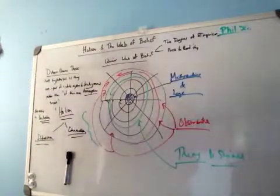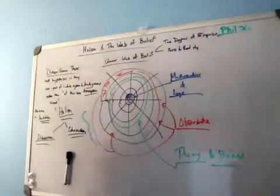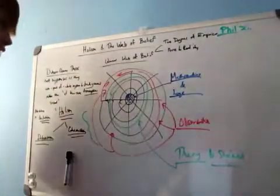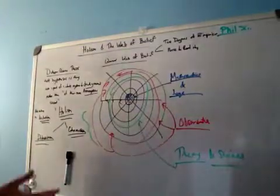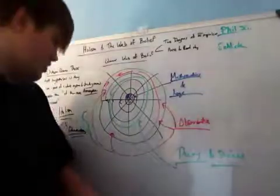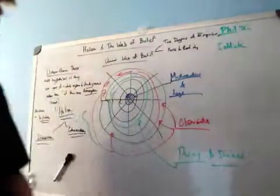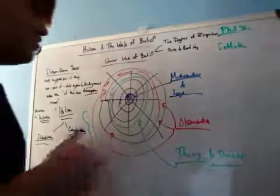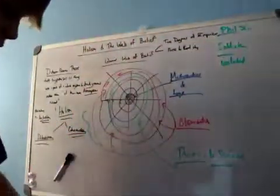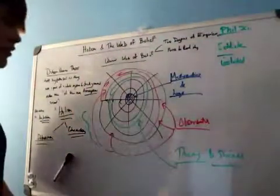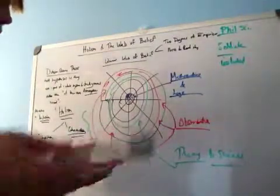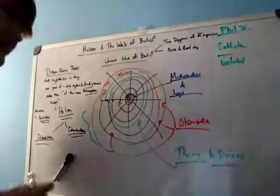We have Pierre Duhem and Willard Van Armand Quine. To contrast holism with another kind of theory in philosophy of science, we have people like Schlick, and I'm going to use his words because in his article 'The Foundation of Knowledge' he states that a hypothesis or statement should be tested of its own accord — that it should be isolated. Testing by isolating a certain hypothesis.